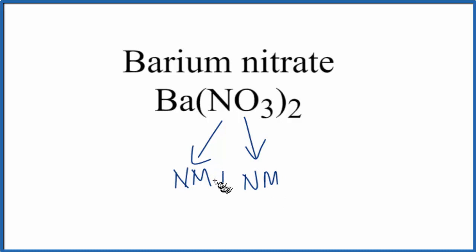When we have nonmetals bonded together, that means that we have covalent bonds. So the bonds between the nitrogen and the oxygen atoms here in this nitrate ion, that's going to be covalent.